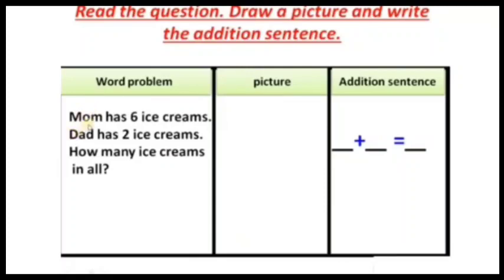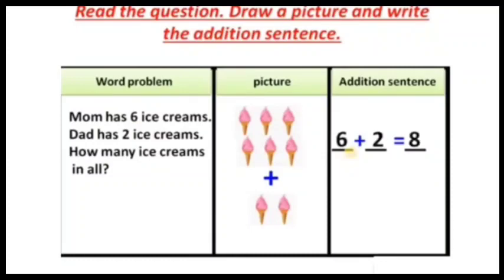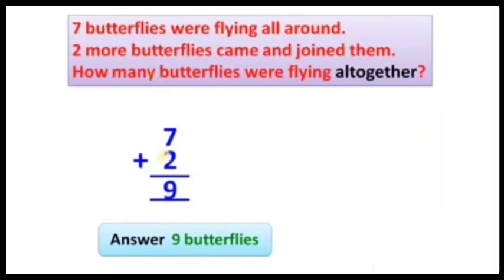Next: Mom has six ice creams and Dad has two ice creams. How many ice creams in all? First draw six ice creams and two ice creams, then count the total. Draw the picture first and afterwards write the addition sentence using the plus symbol. In the blank write: six plus two equals eight.